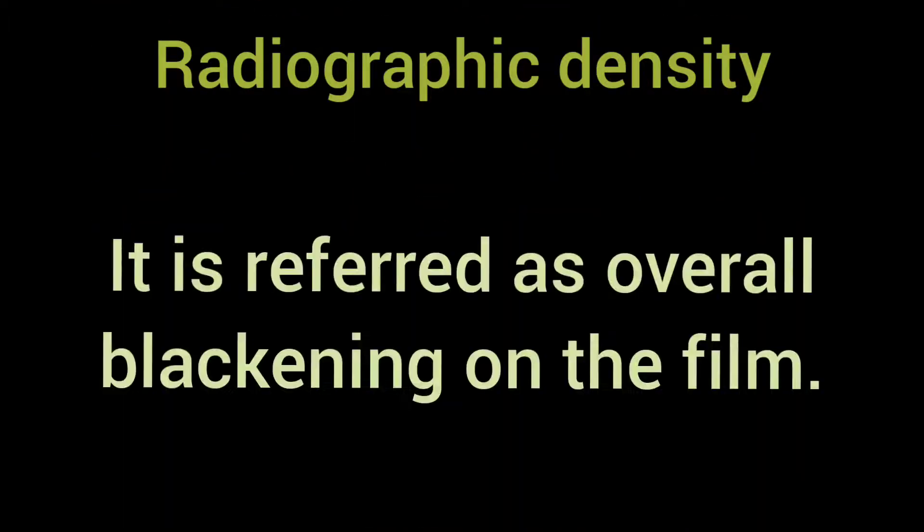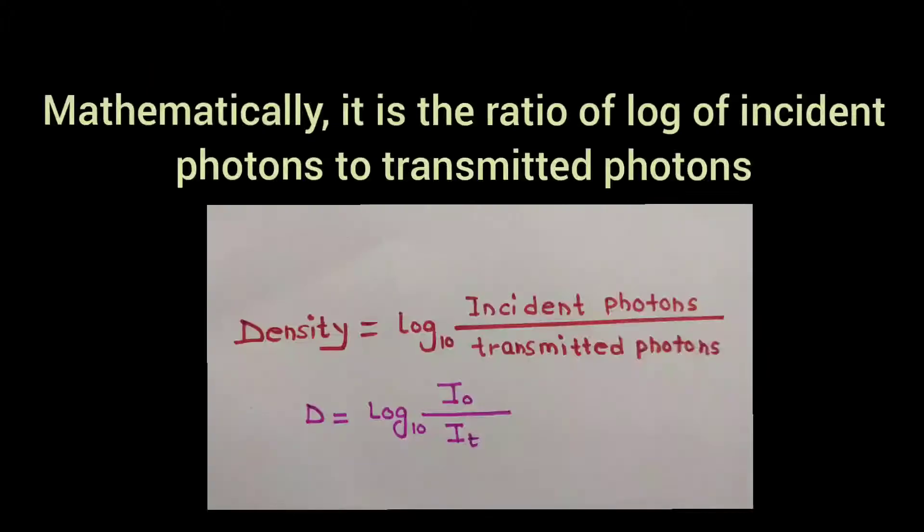Radiographic density is referred to as overall blackening on the film. Mathematically, it is the ratio of log of incident photons to transmitted photons.